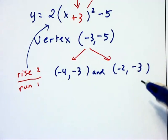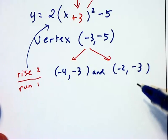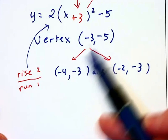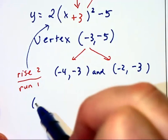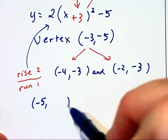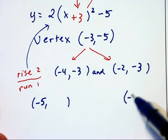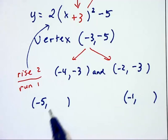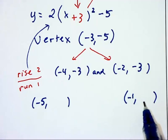Now, if we're needing 2 additional points on each side, well, now we've got a little bit of a problem because I can't rise 2 and run 1 again. But I do know negative 3, negative 4, I'm going to have negative 5 comma something and over on the other side, negative 1 comma something. The y-value in each of these cases is going to be the same because of symmetry.